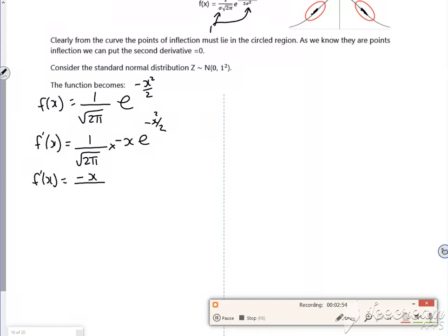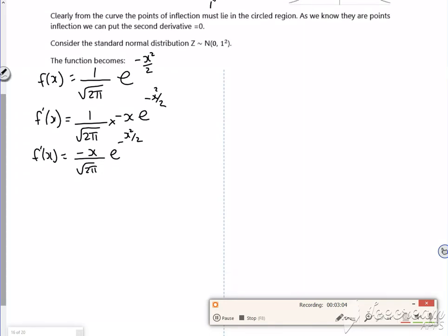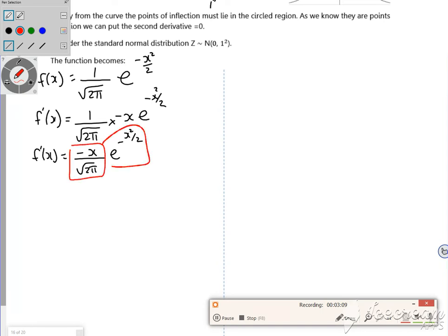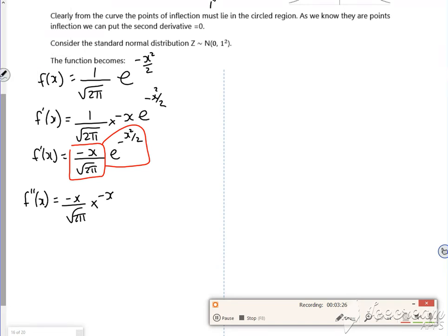Right, now then I want to differentiate it again, but I need to use the product rule, and you've got to remember with this that the root 2π is just a number. Right then, so do you remember my way of doing this? It's the first bit times by the second bit differentiated, which I'm saying is minus x e to the minus x squared over 2.